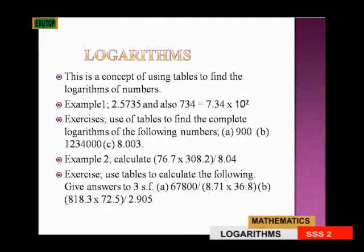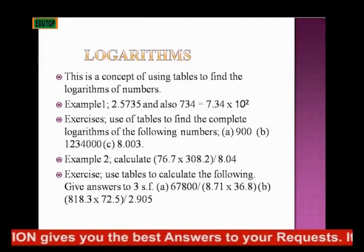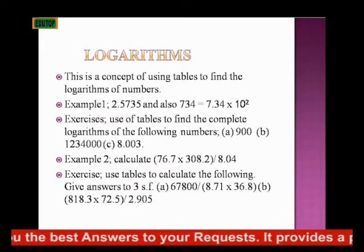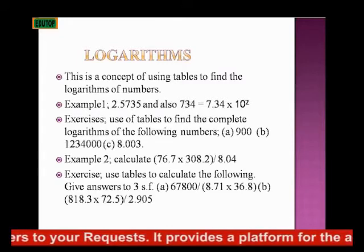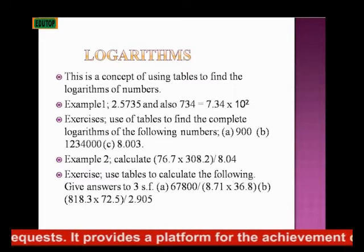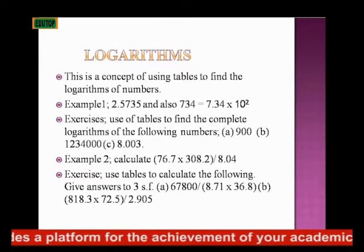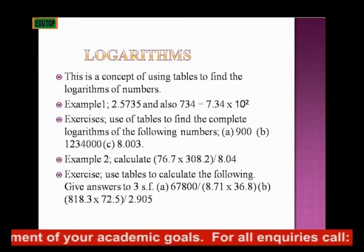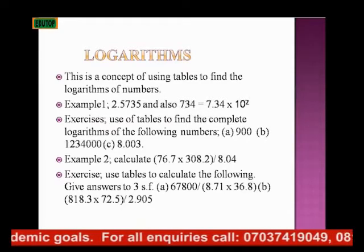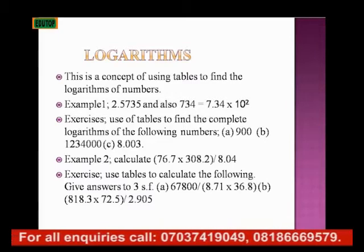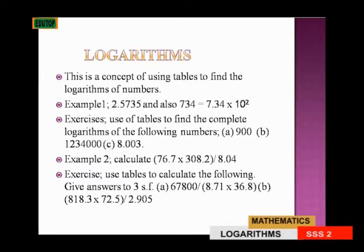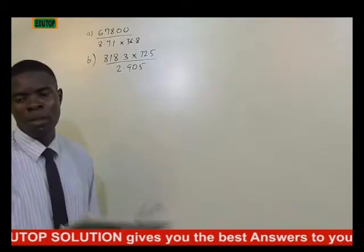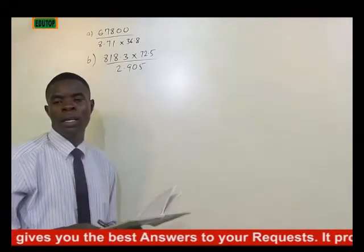Use tables to calculate the following, giving answers to 3 significant figures. Question number 1: we have 6,7,8,0,0 divided by 8.71 times 36.8. Question number 2: we have 818.3 times 72.5 over 2.90905. These are the two questions drawn from the topic, and we will resolve them using the log reading table.